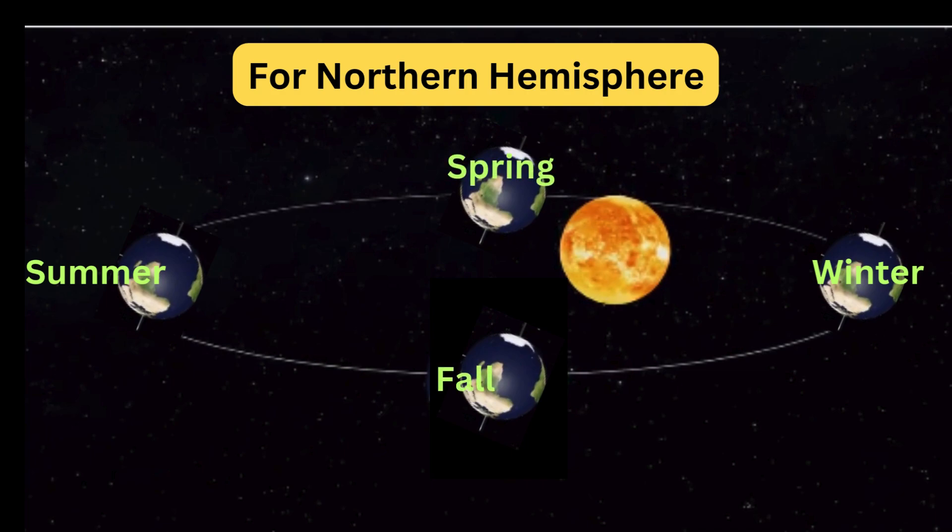Here's the key: Earth's tilt stays the same as it moves around the sun. That's what creates the seasons, not how close we are to the sun.